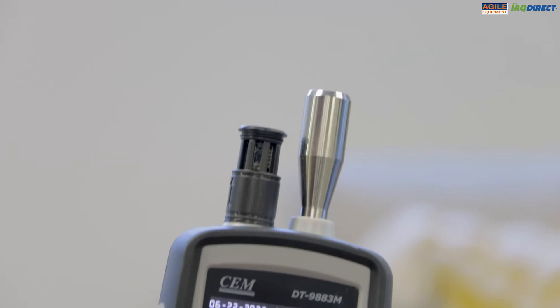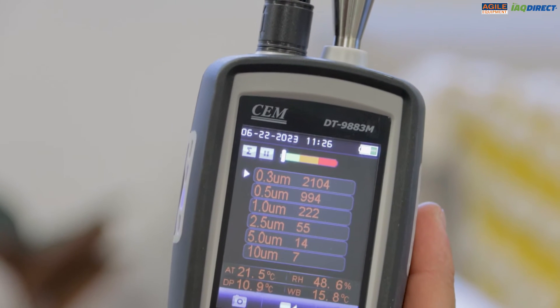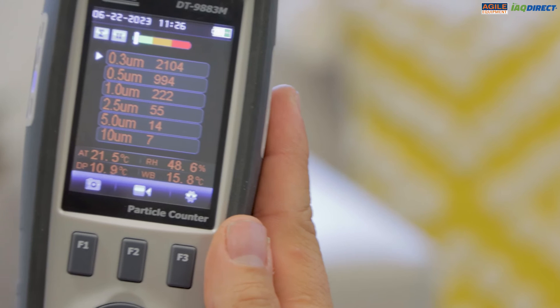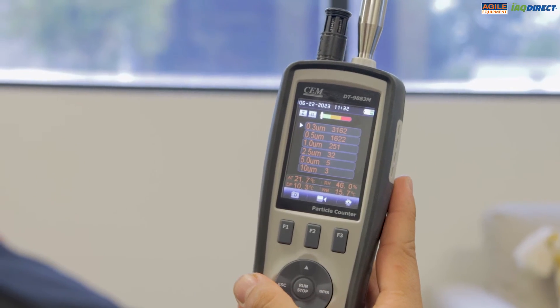By default, the sampling time is set to 21 seconds. This is the time it takes to sample 1 litre, and therefore it is 2.83 litres per minute. If the sampling time is not long enough, you can change it in the settings.